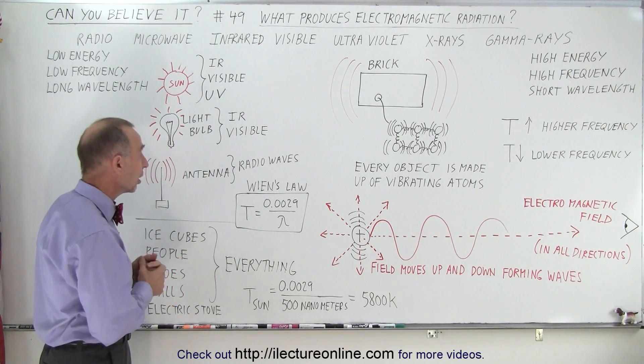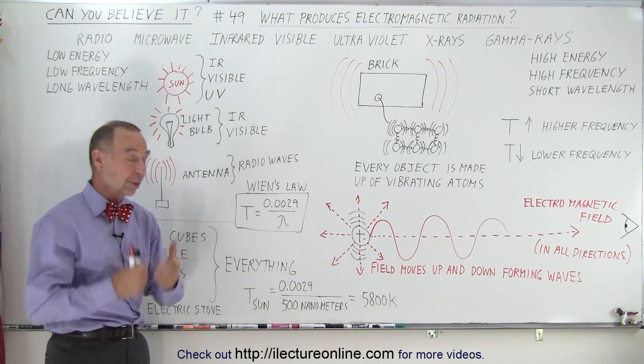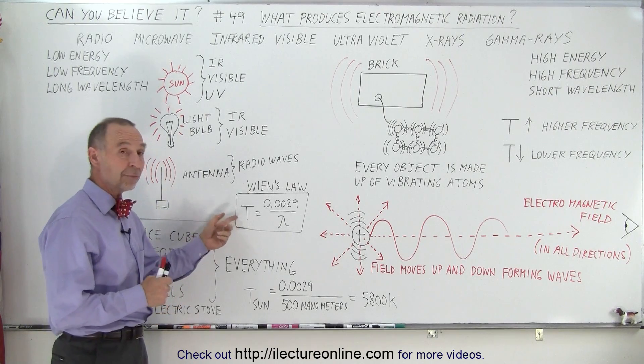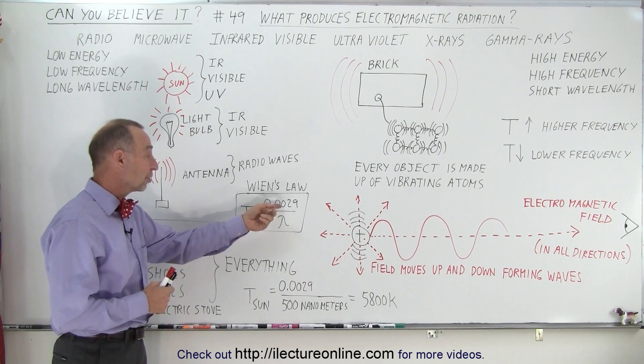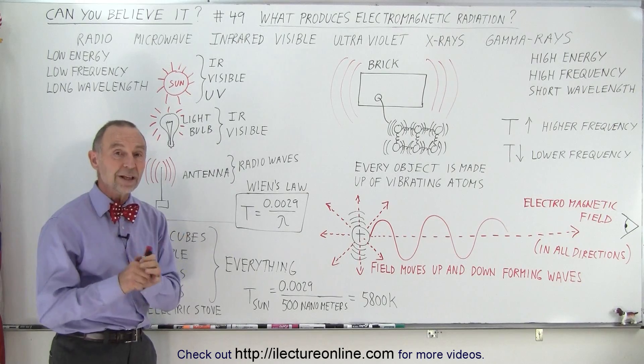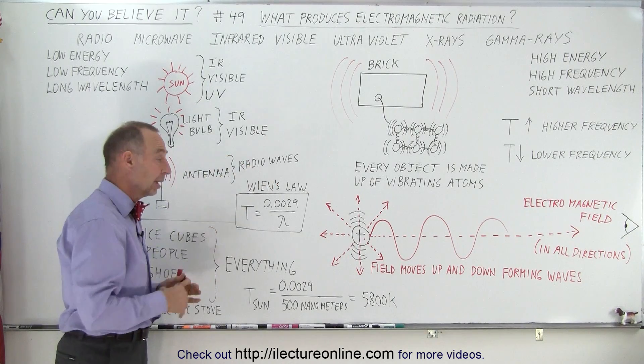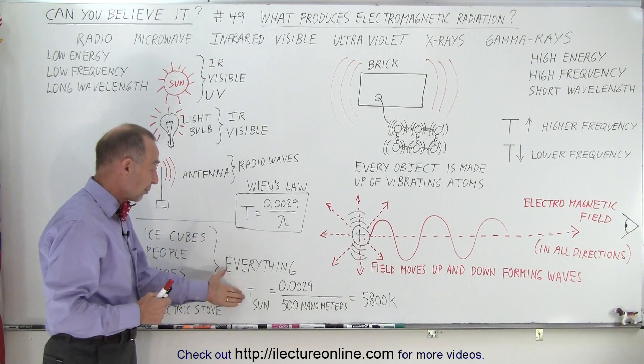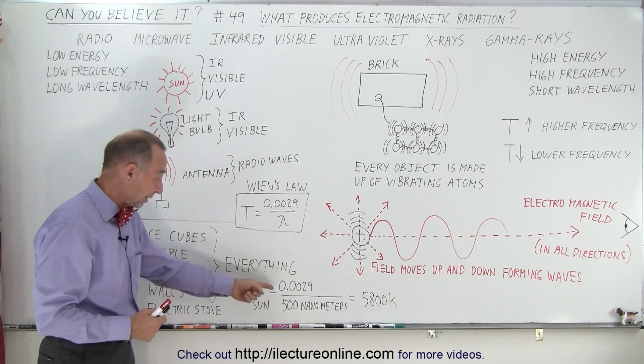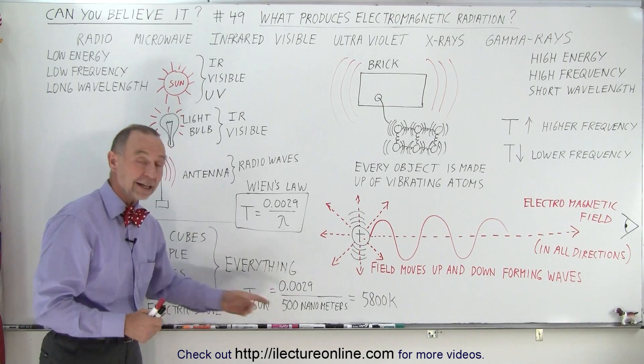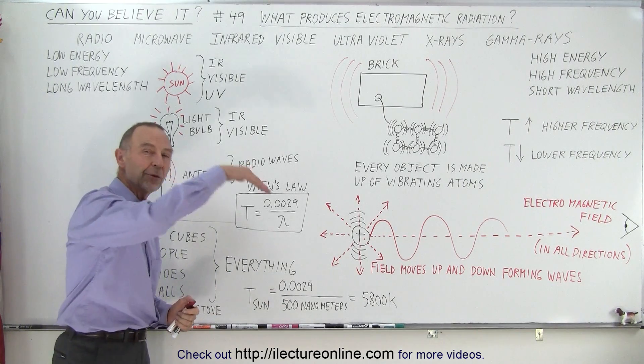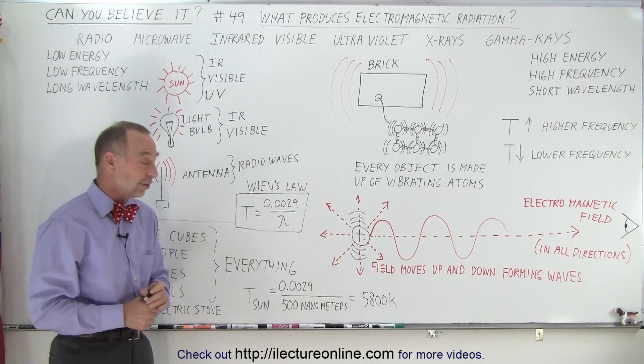We call that Wien's Law, because Wien discovered this relationship, that the temperature of an object can be determined by this constant divided by the wavelength of the radiation. And for example, the temperature of the sun can be determined by simply taking this number, this constant, and dividing it by the average wavelength of the radiation coming from the sun, which is about 500 nanometers.